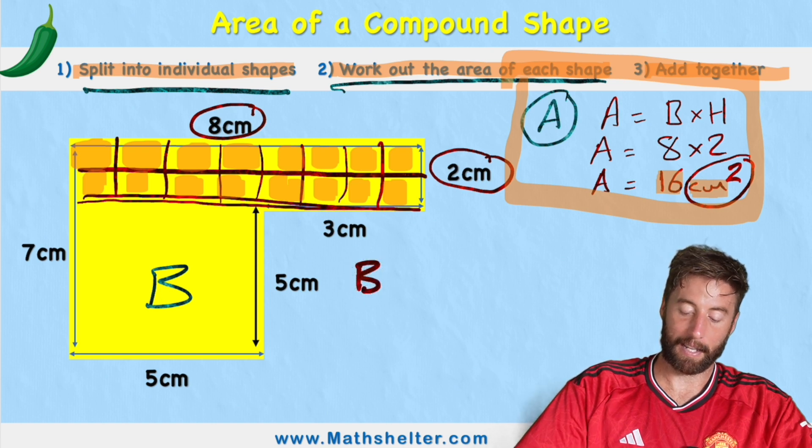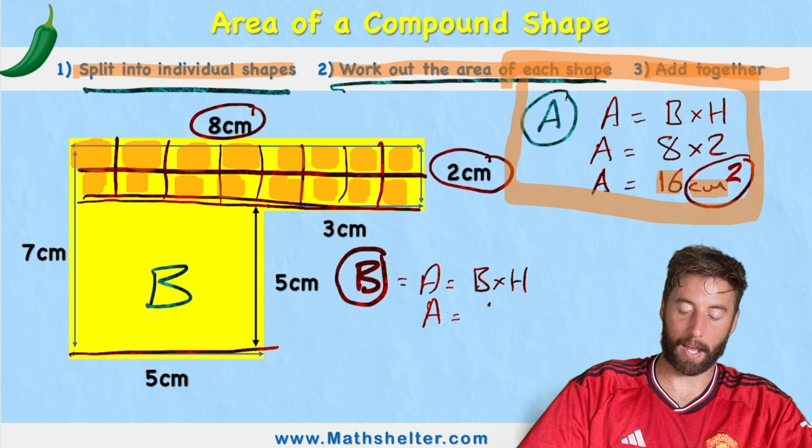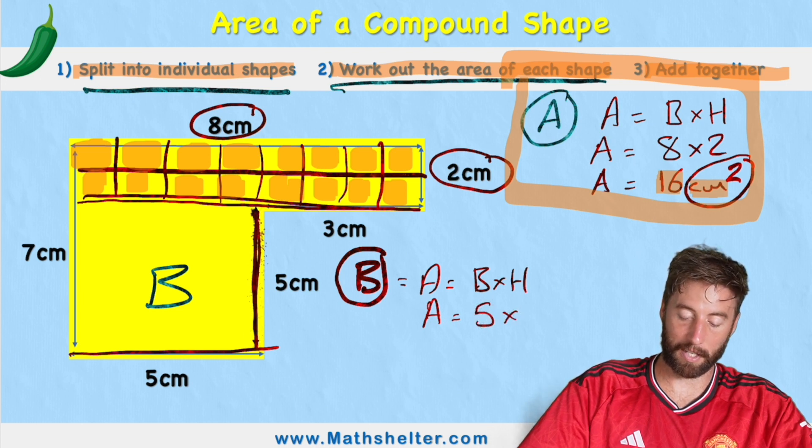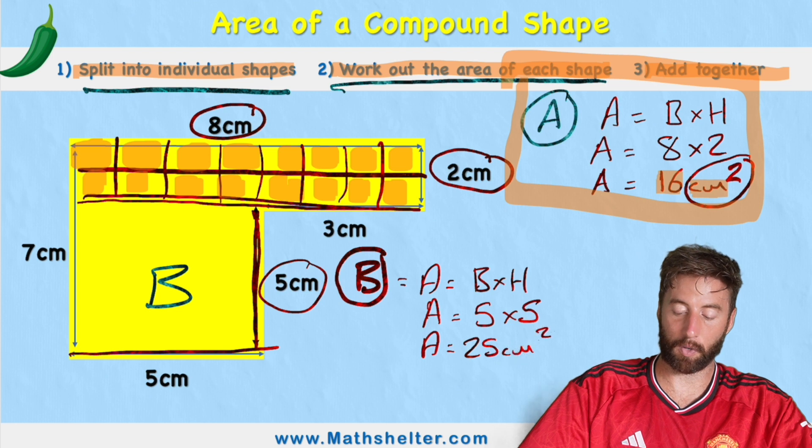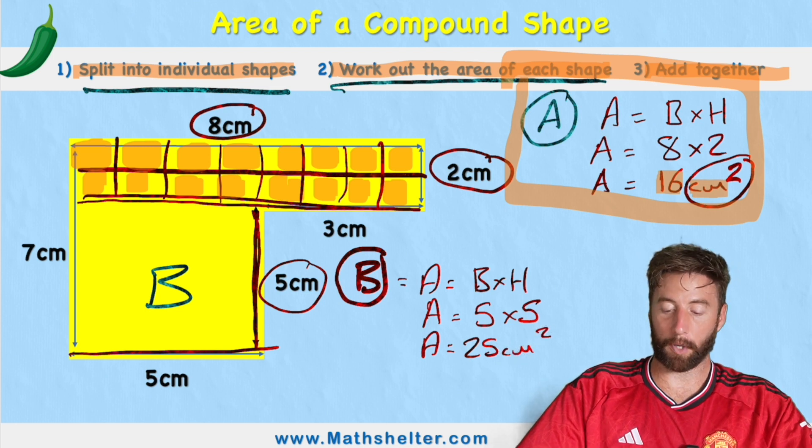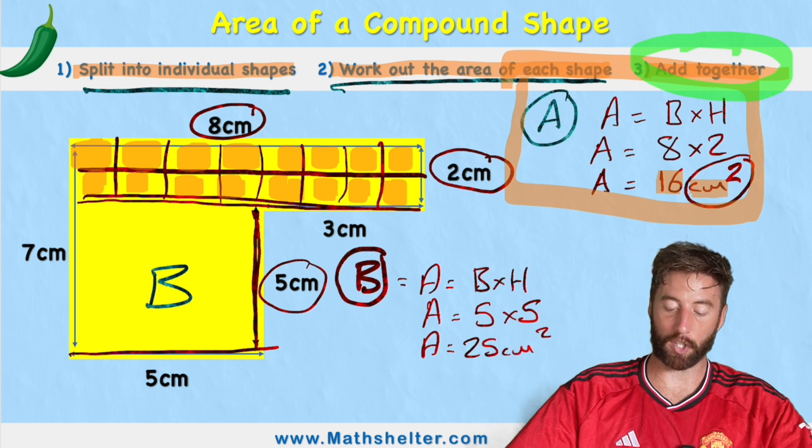Shape B is area equals base times height and the base is 5 centimeters so we have 5 times the height which is this length here which is also 5 centimeters. So my area equals 25 centimeters squared but I'm not yet finished because my final step said to add them together to get the total of my compound shape.